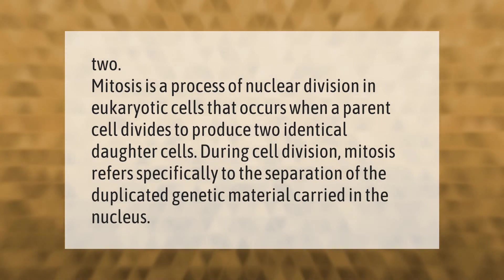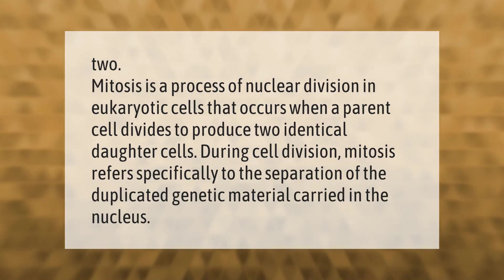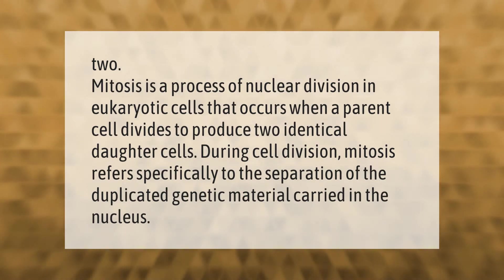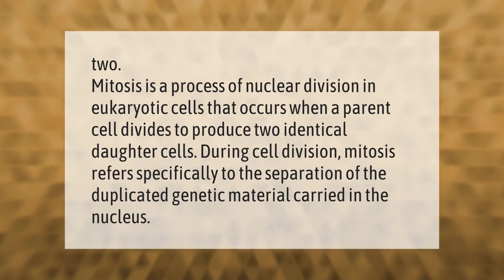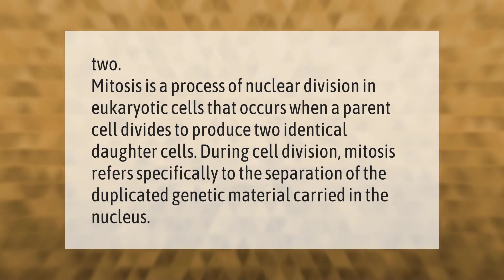Mitosis is a process of nuclear division in eukaryotic cells that occurs when a parent cell divides to produce two identical daughter cells. During cell division, mitosis refers specifically to the separation of the duplicated genetic material carried in the nucleus.